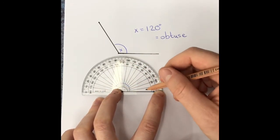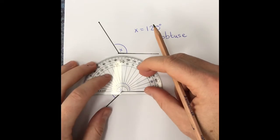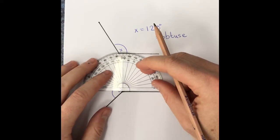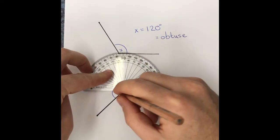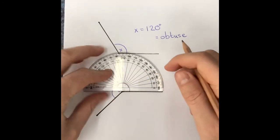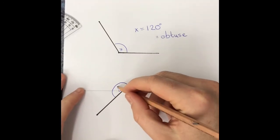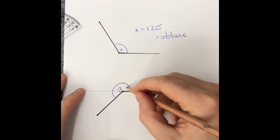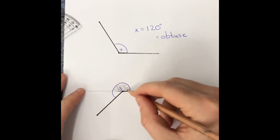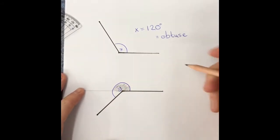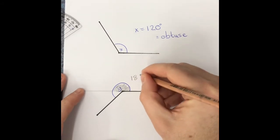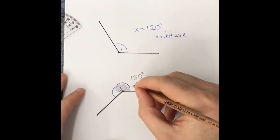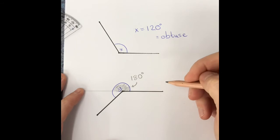The way to do it now is draw a straight line. And you know here, if I shade that in, the shaded part equals 180 degrees.